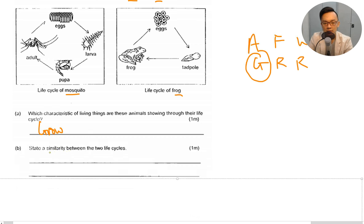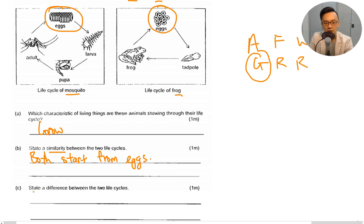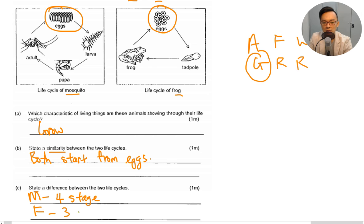State a similarity between the two life cycles: they both start from eggs. State a difference between the two life cycles: the mosquito has a four-stage life cycle, but the frog has a three-stage life cycle. That is the difference between the two.